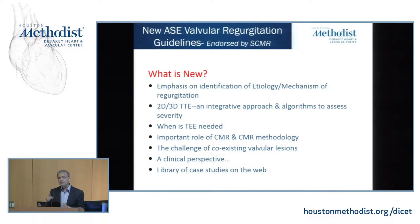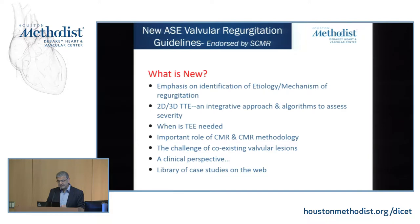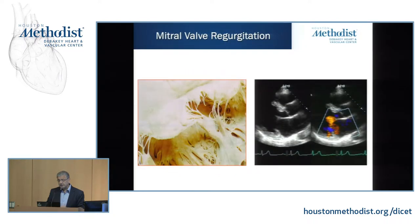So what's new in these guidelines? They were 13 years after the first guideline, so it was about time to update them. There's an emphasis on identification of etiology and mechanism, an integrative approach, algorithms to help in the assessment of severity, when TEE is indicated — completely new — as well as CMR. We talked about CMR yesterday, and there's a much more detailed approach to CMR in regurgitant lesions, the challenge of coexisting valve lesions, and a clinical perspective. There are already quite a few cases on mitral regurgitation and other regurgitant lesions available on the web.